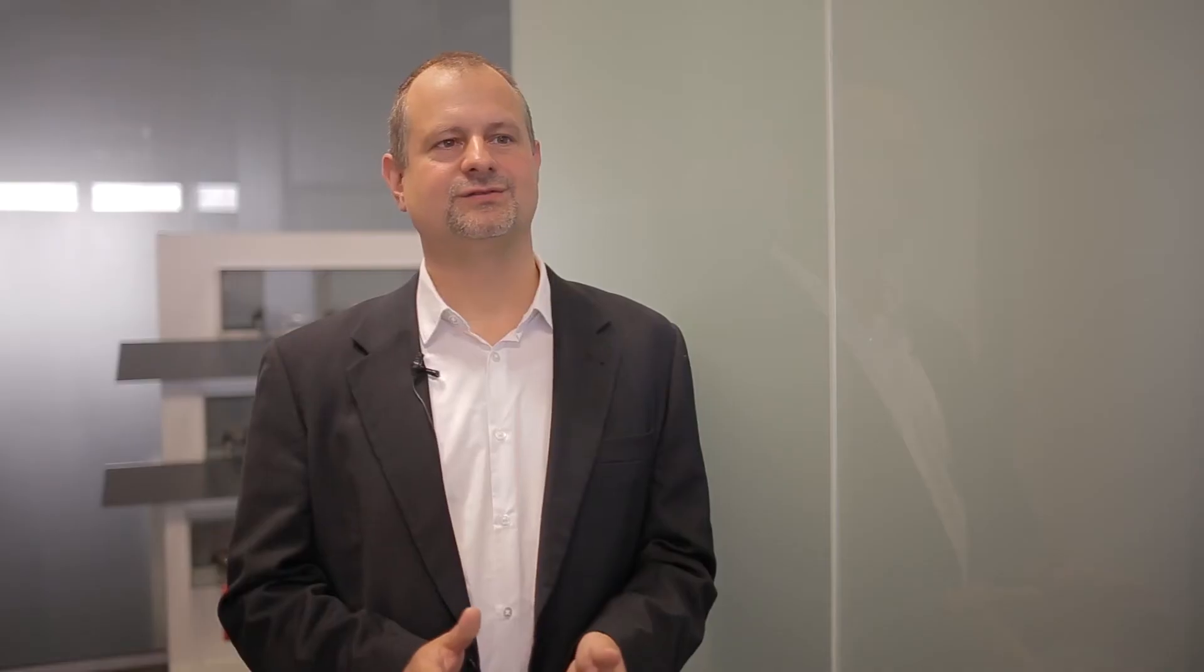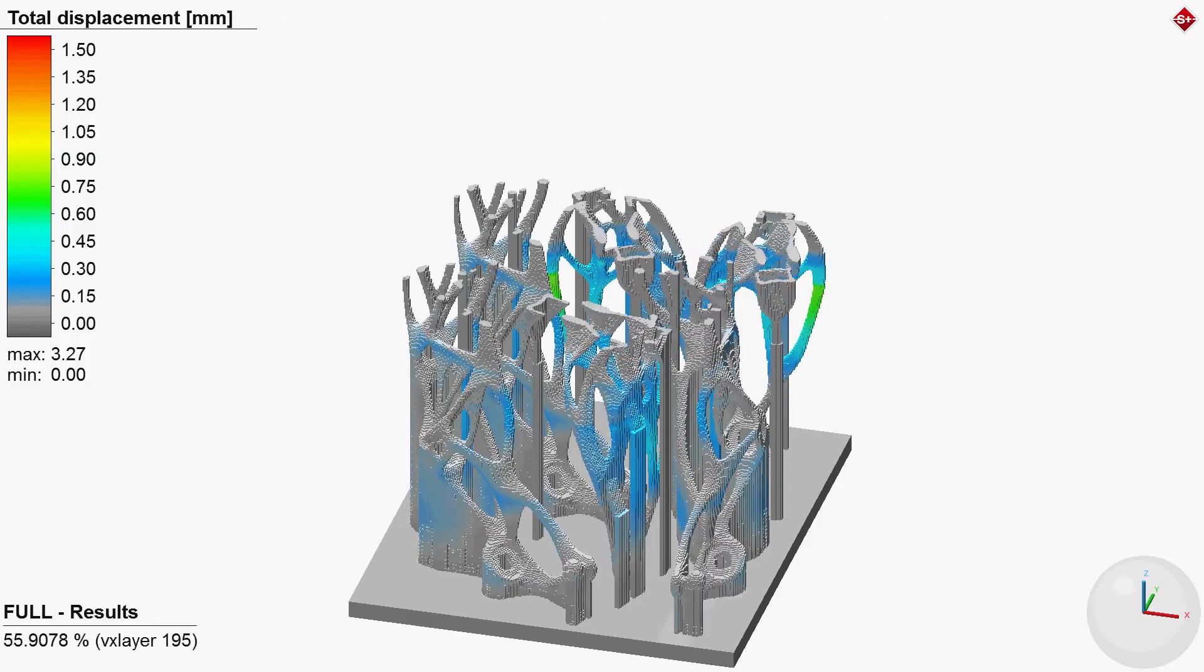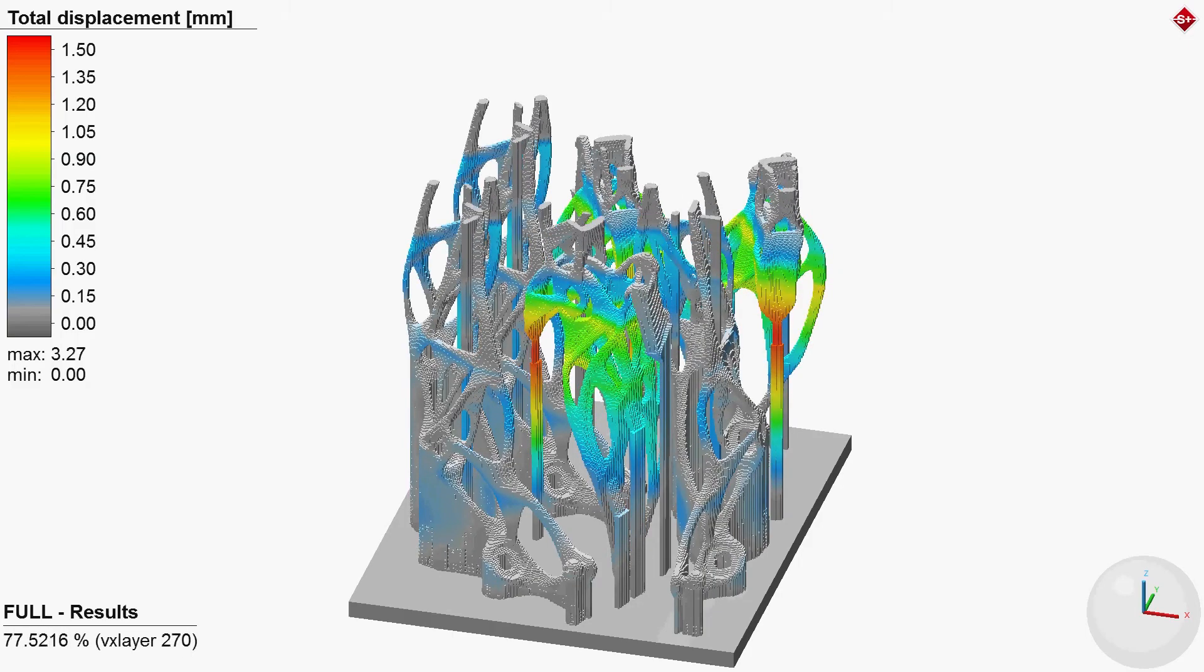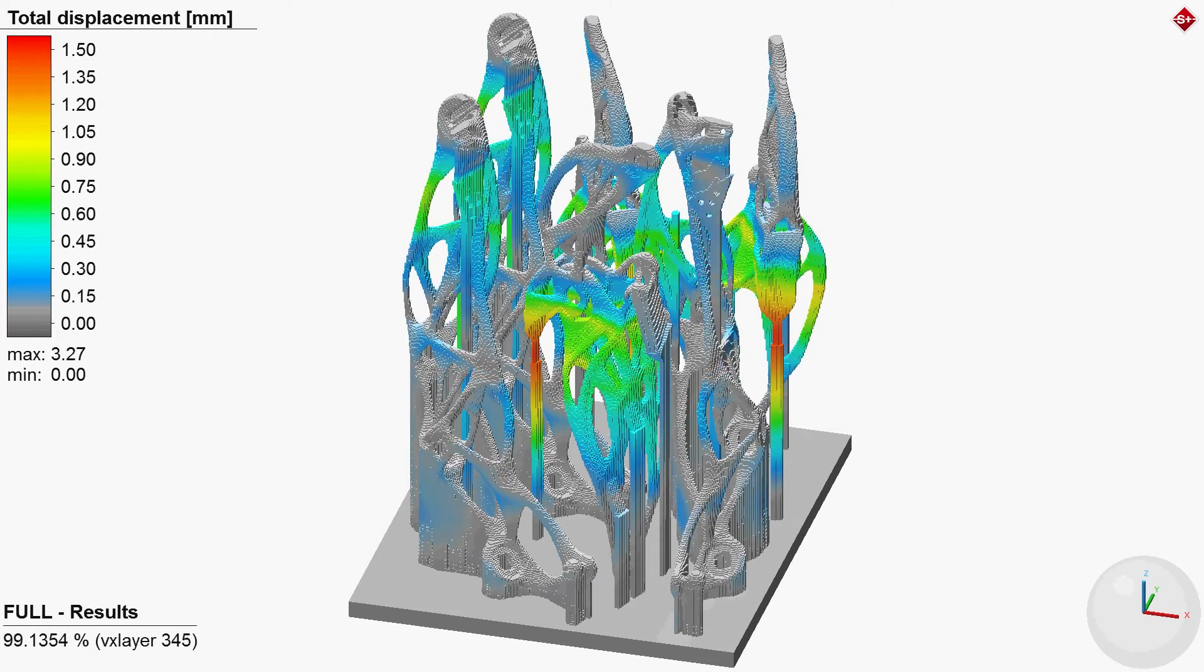In an additive production process, warping and residual stresses occur in the component due to the concentrated heat input with high heating and cooling rates. A distorted hinge can deviate one or two millimeters from the targeted geometry. With Simufact Additive, it is possible to simulate the printing process and the subsequent process steps, and thus predict distortion and tension.